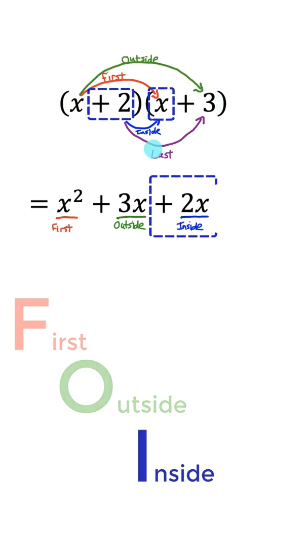The I stands for inside, those are the two inside terms of our product, the 2 and the x. Those will get multiplied together to get 2x.